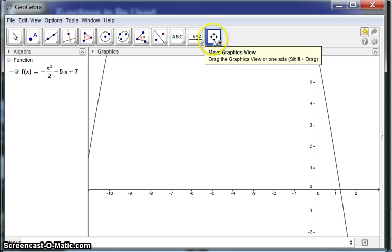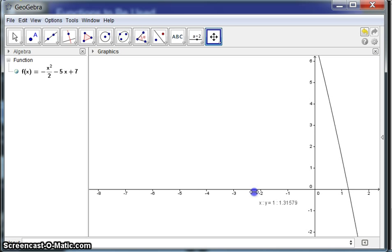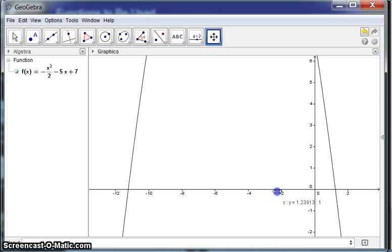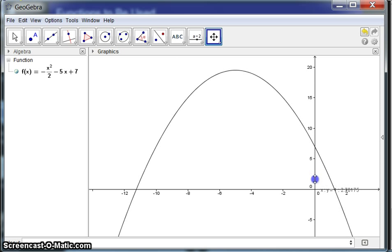And when I'm in this move graphics view, one nice thing is if you go to the axes, notice what happens here. You get that double arrow. And what you can do is move the axes that way, and you might say, okay, for the x-axis, that seems fairly reasonable. It's showing the two x-intercepts, and what we have to do then is adjust the y-axis. And we do that by grabbing a hold of that, get that double arrow, and in this case, bringing it down.